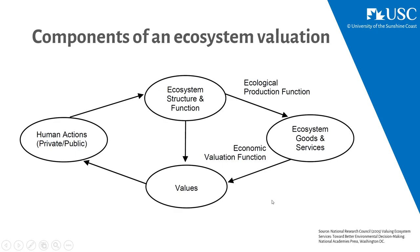Within an undertaking for ecosystem evaluation, here's a common representation of the different components, where you have ecosystem structures and functions producing ecosystem goods and services through some complicated ecological production function — for example, the relationship between trees, water, vegetation, climate, and microorganisms in the production and sequestration of carbon or the formation of soil. There's a high degree of complexity and uncertainty about that relationship between ecosystem structure and function and the goods and services produced.